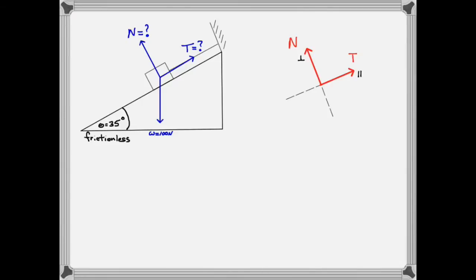So that means we'll have to find components for the weight vector that do align with the new axes. So that means one component of the weight will be parallel to the inclined plane. So we'll label that W parallel. And the other component will be perpendicular to the plane. So we'll label that W perpendicular.